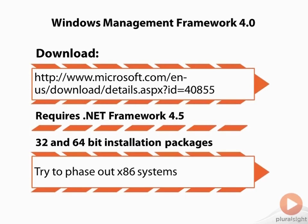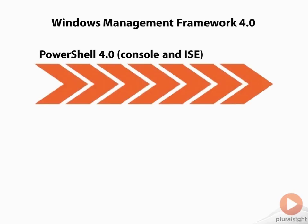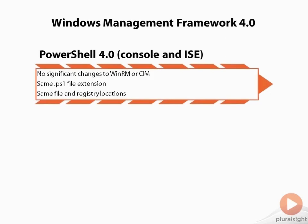There really is not too much different, but be aware that when you install the 64-bit, you'll still get the 32-bit links to the shells if you need them. What you get with the Management Framework version 4 is, of course, primarily PowerShell version 4 — both the console, the blue console you're probably familiar with, as well as the ISE. There aren't any significant changes to WinRM or CIM, which you also get packaged along with the Management Framework like you did with version 3. The PS1 file extension stays the same, the file and registry locations are still the same — it's still in the Windows System32 PowerShell directory v1. None of that has changed; the only thing that has changed is some version numbers and obviously some updates to PowerShell 4.